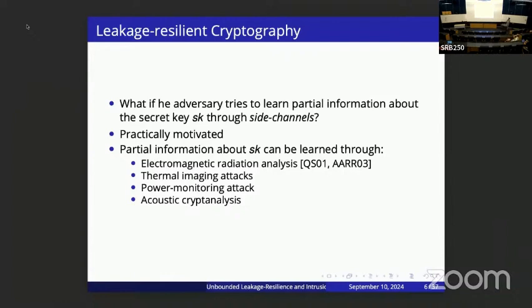This is practically well-motivated: researchers have shown various ways of learning partial information about the secret key. For example, you could analyze the electromagnetic radiation emitted by computers during computations involving the secret key, use thermal imaging, monitor power usage, or observe sounds emitted during computation. All of these attacks have been shown to break well-known cryptographic schemes that are secure in the standard model, but as soon as you learn even a little information through such side channels, the schemes are completely broken.